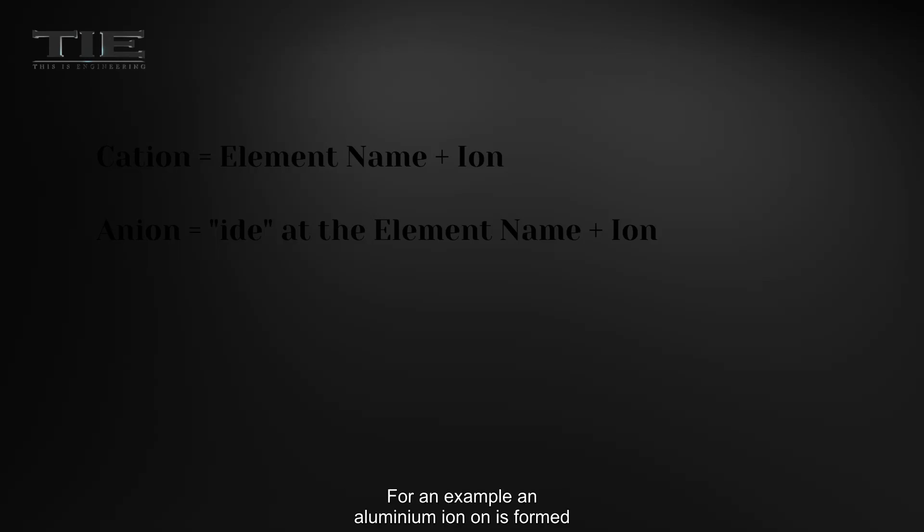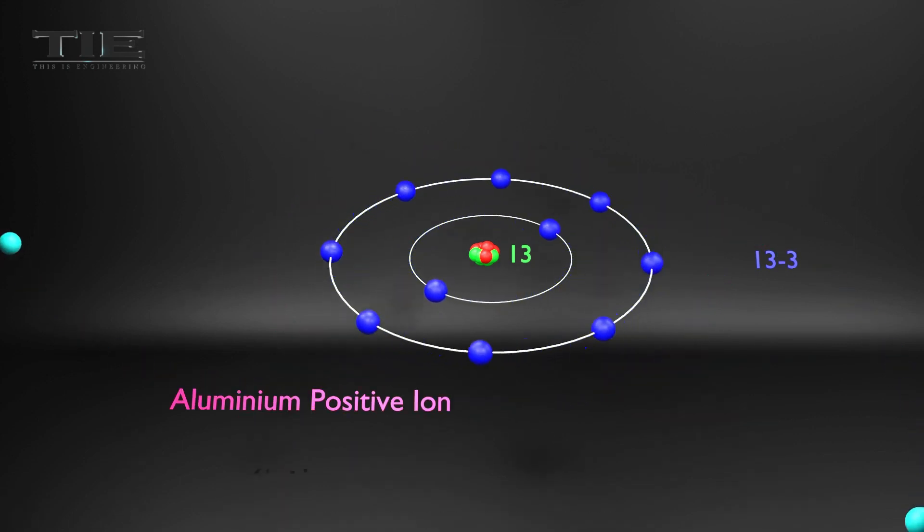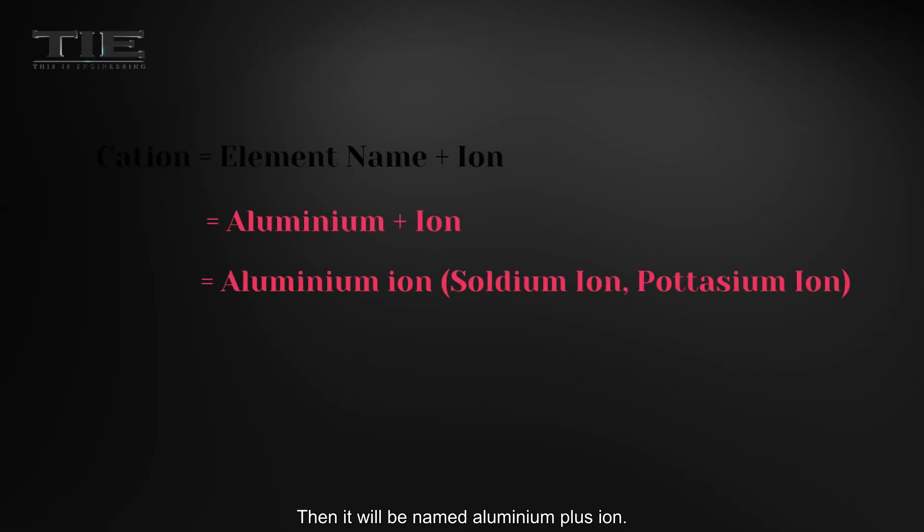For an example, an aluminum ion is formed when neutral aluminum loses electrons. So aluminum ion is a cation. Then it will be named aluminum plus ion.